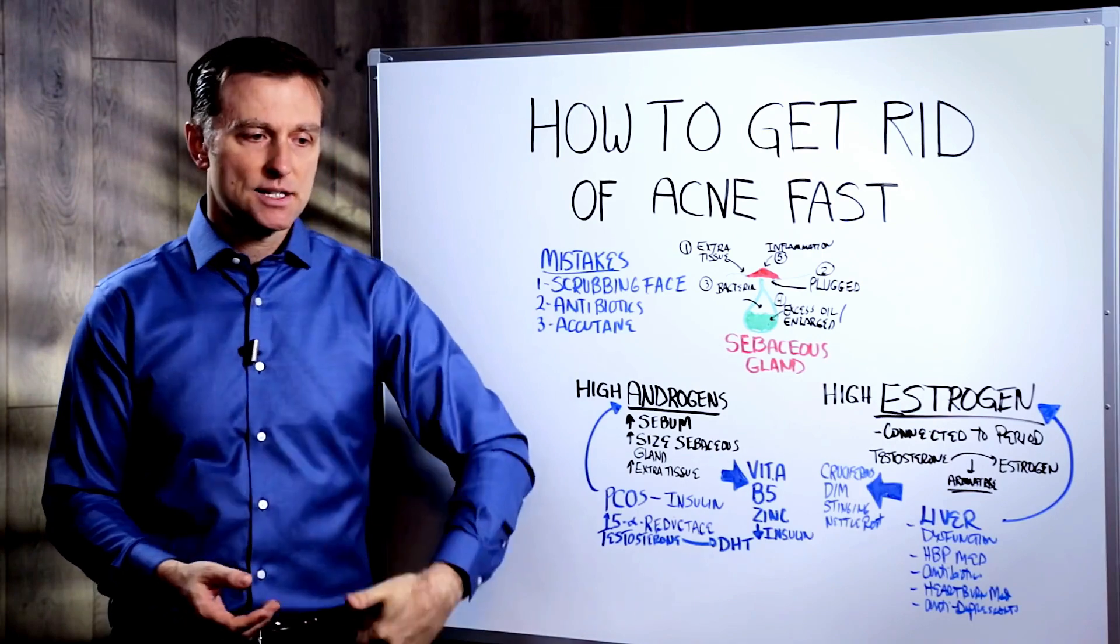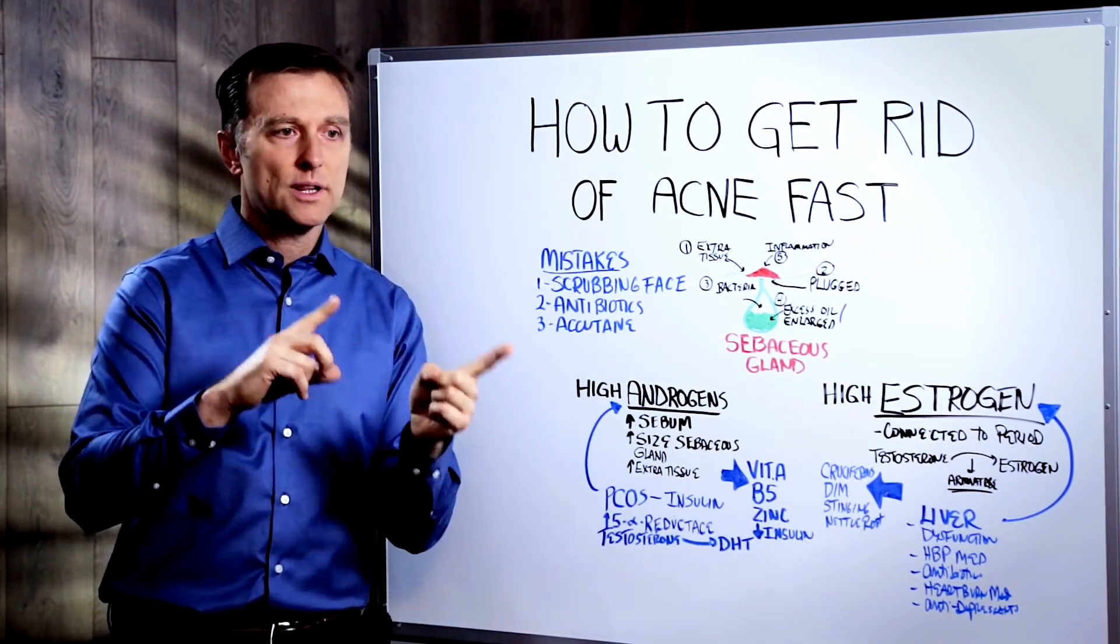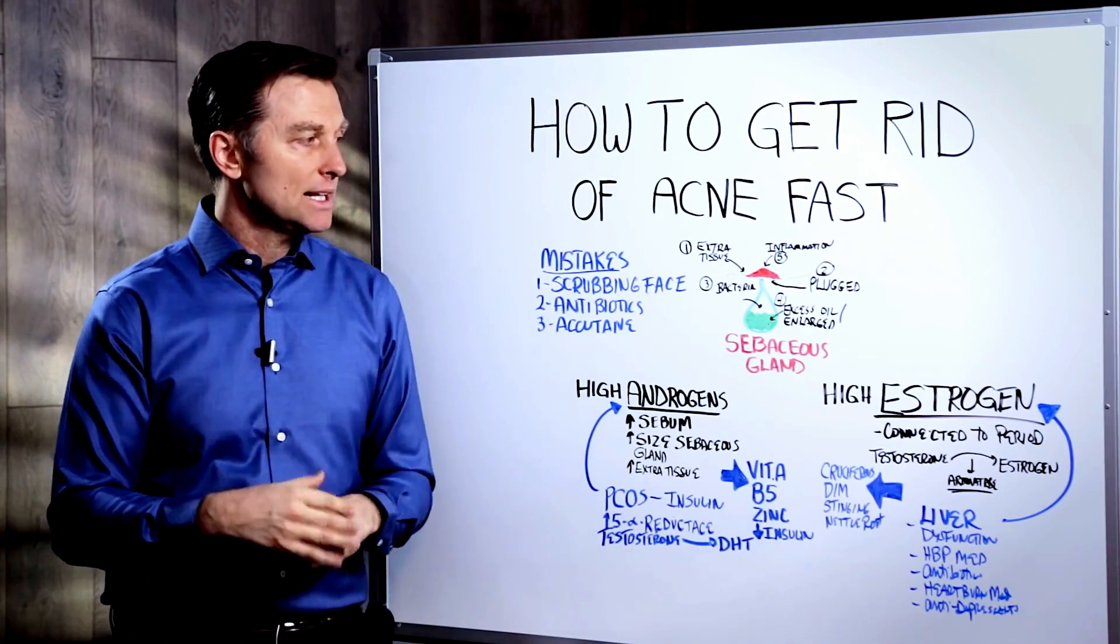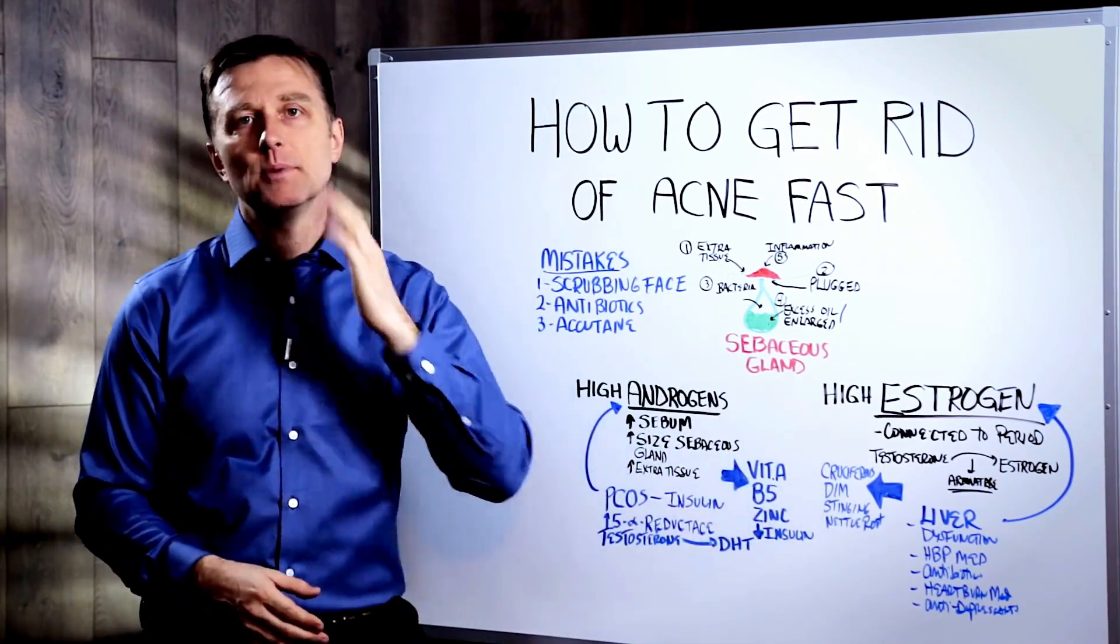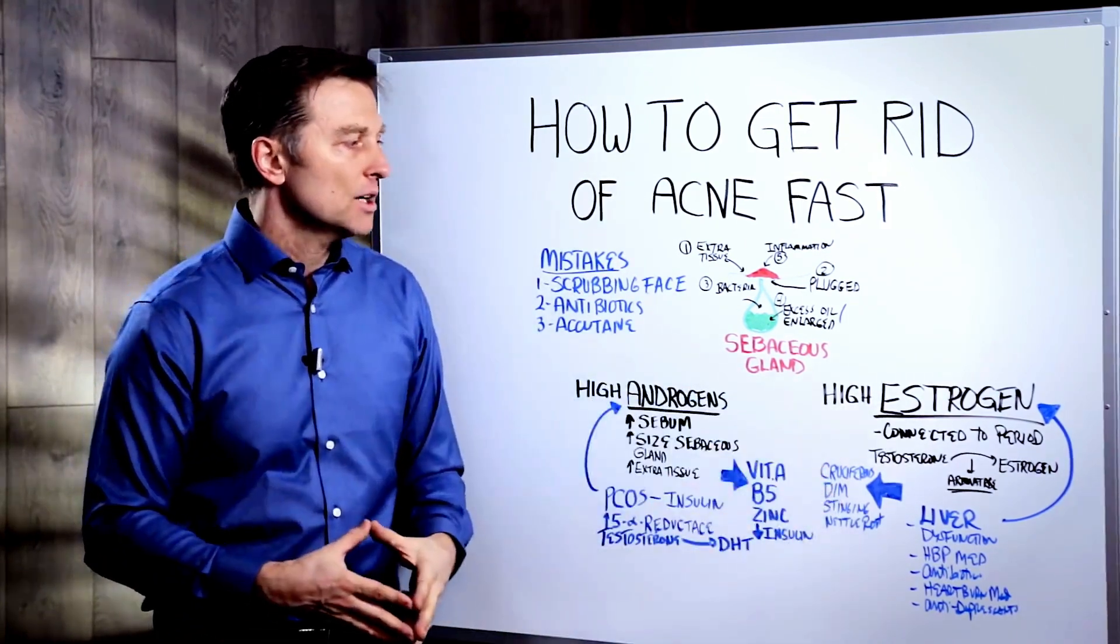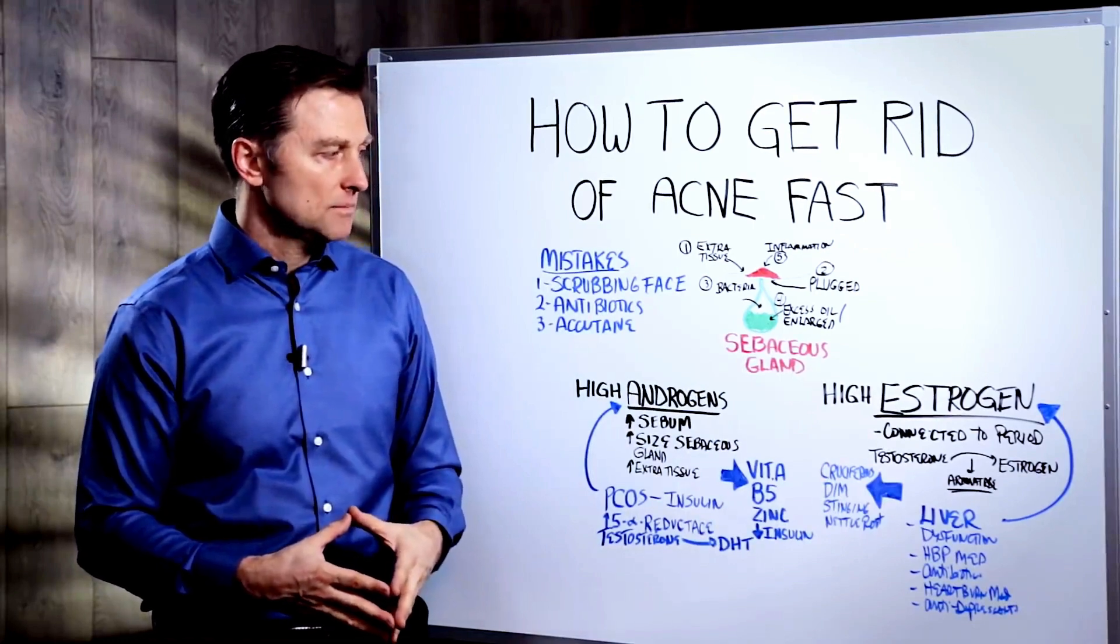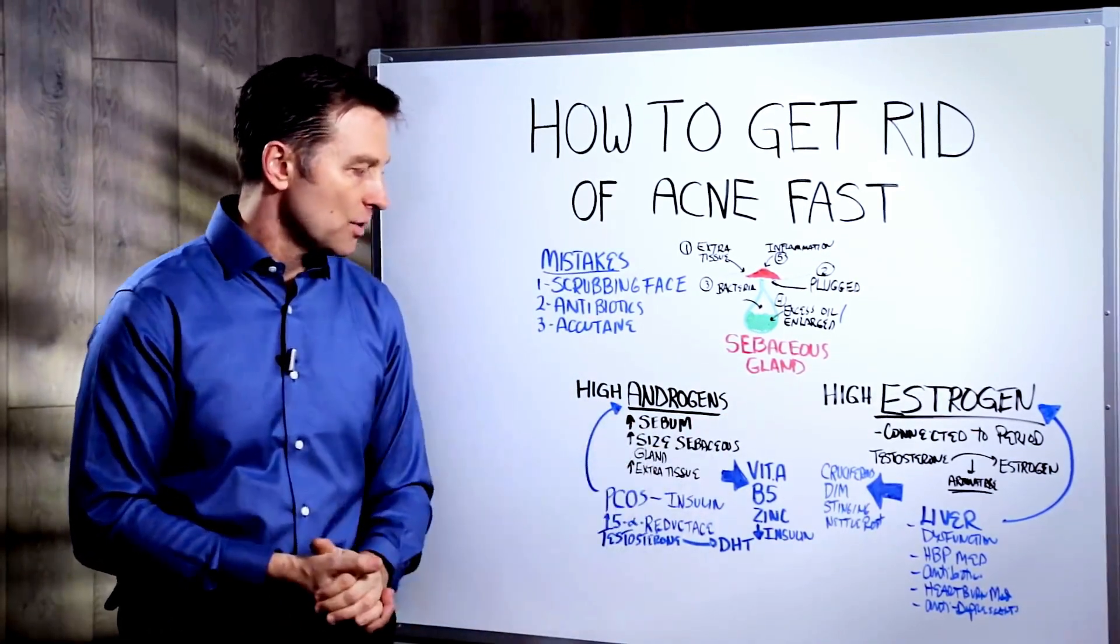So what happens if you have it more on this side, that means the left ovary is pumping out too much estrogen. So it could be estrogen, especially if it's related to your cycle, or it could be androgen. So let's just start with the androgen situation.